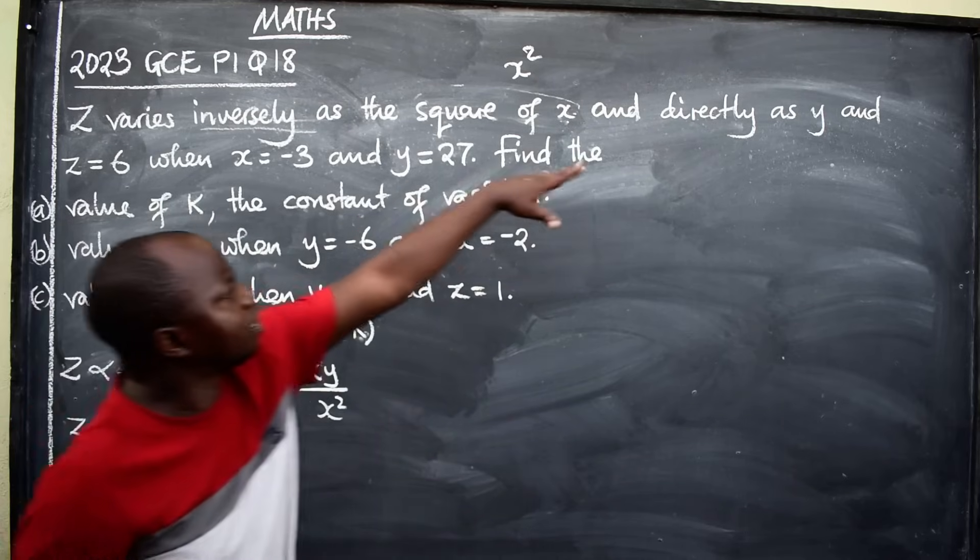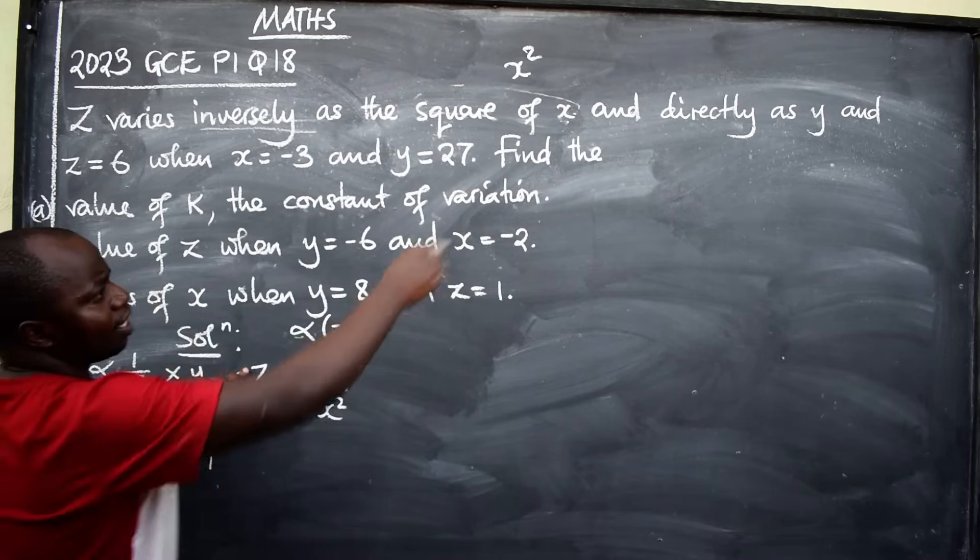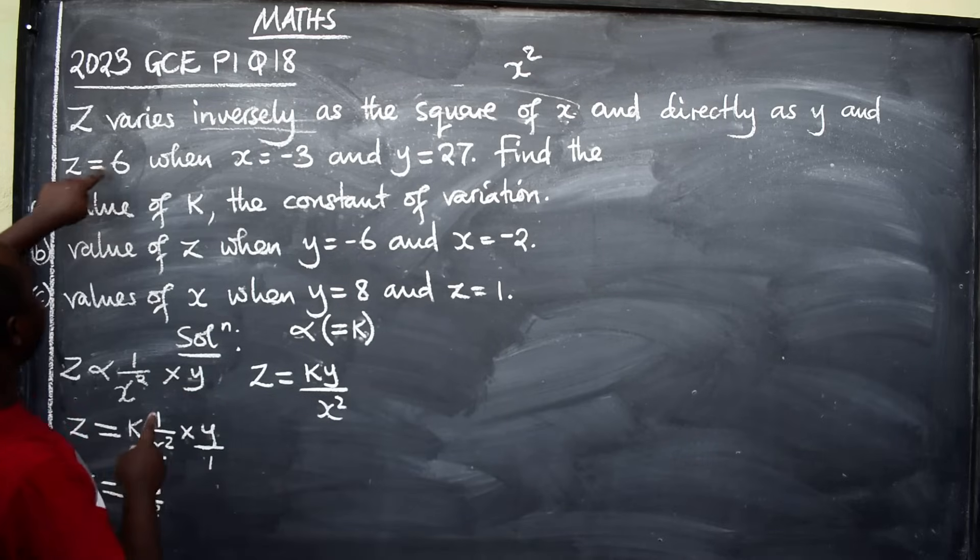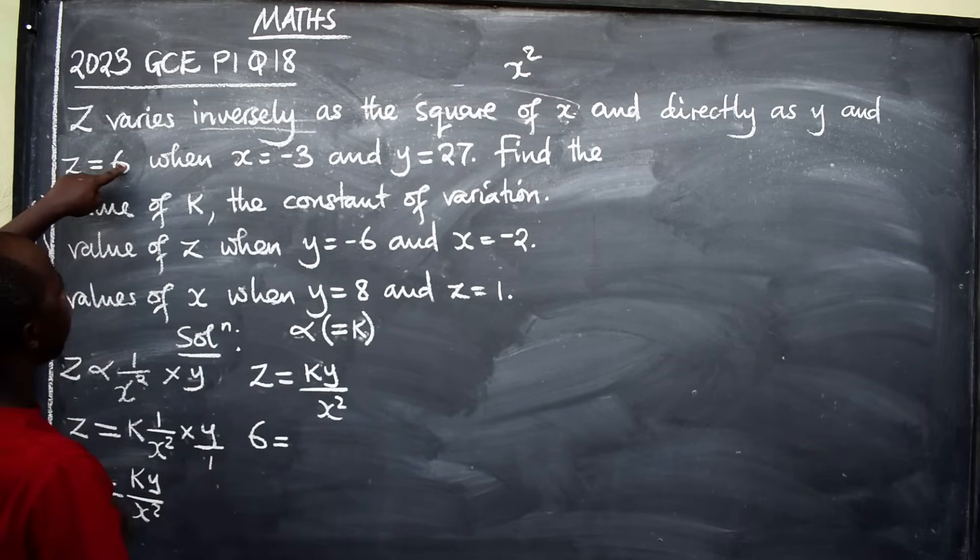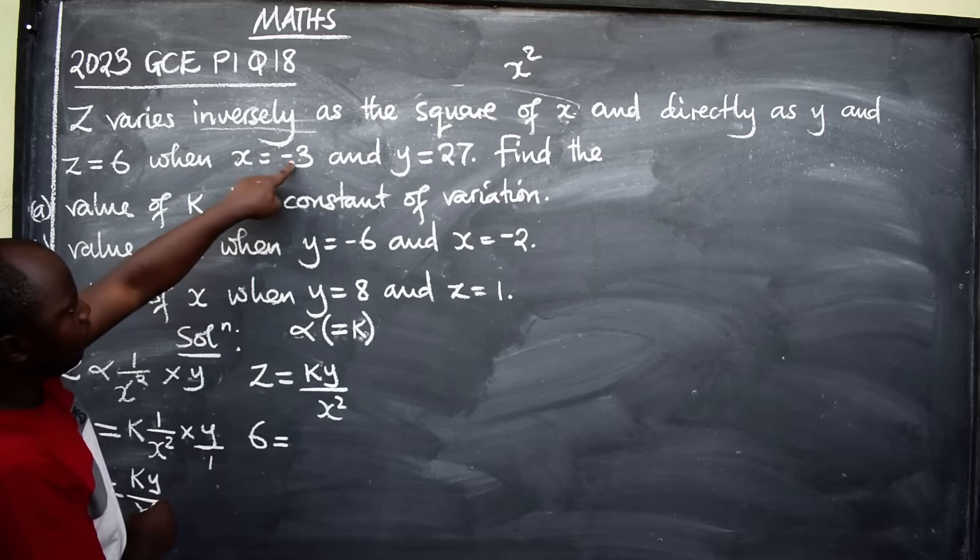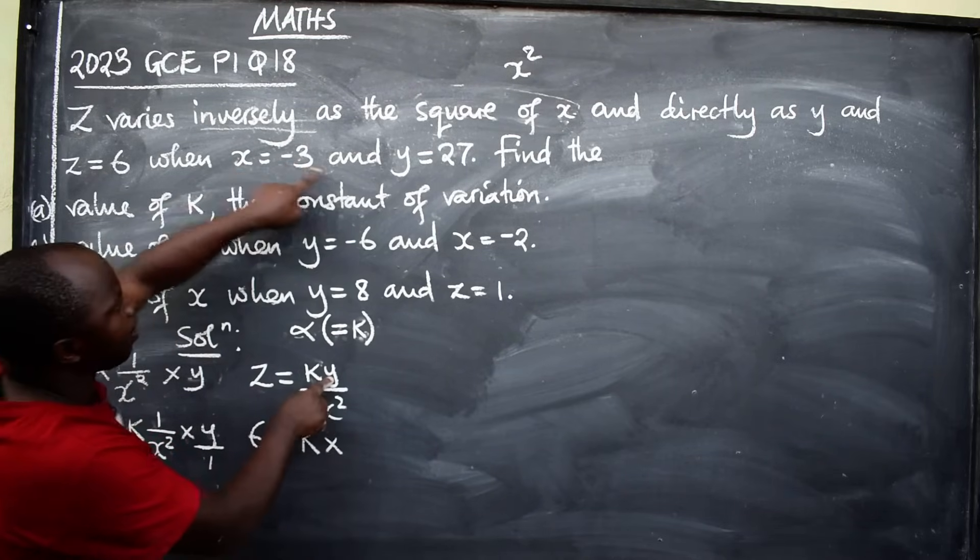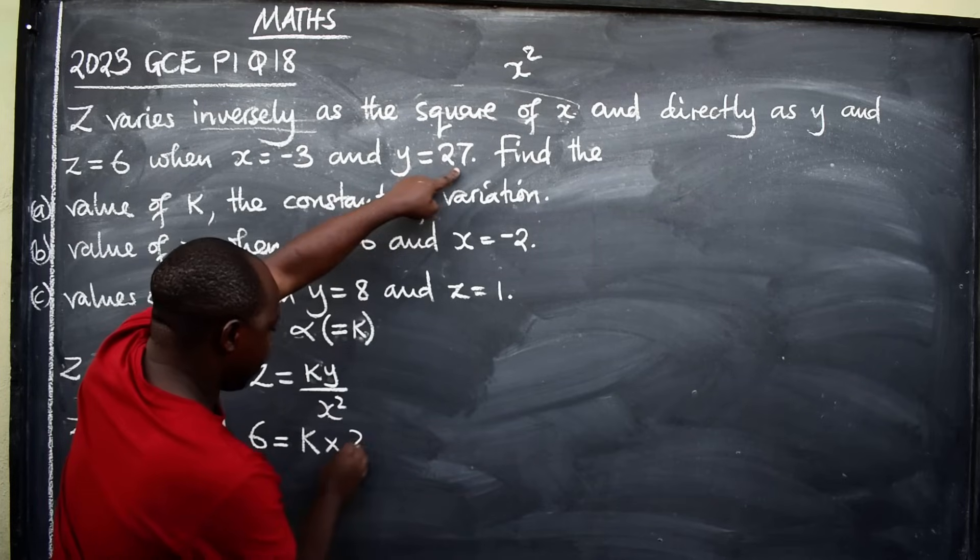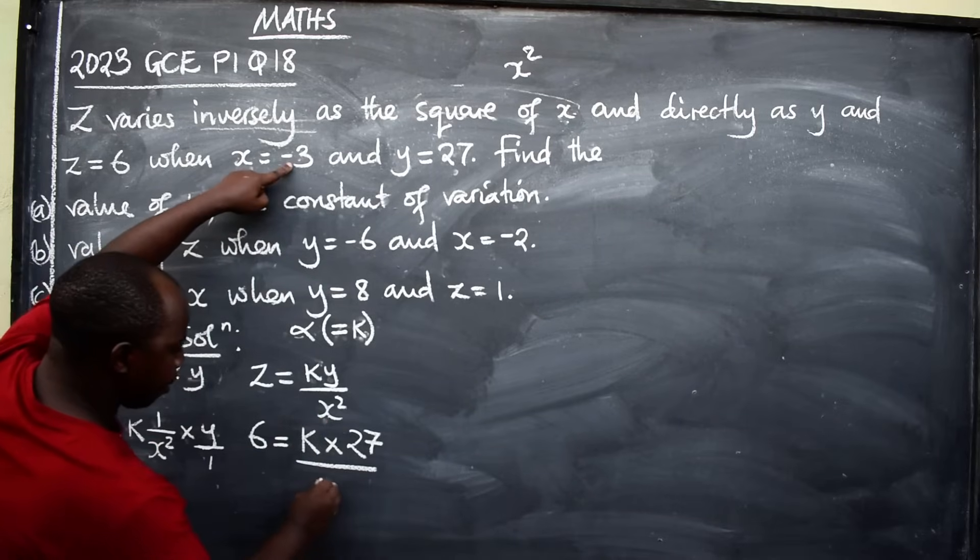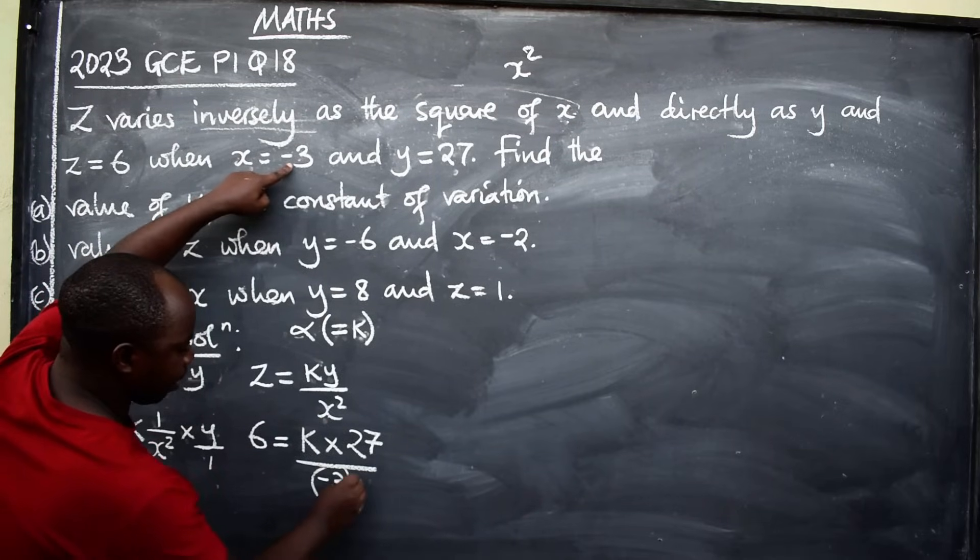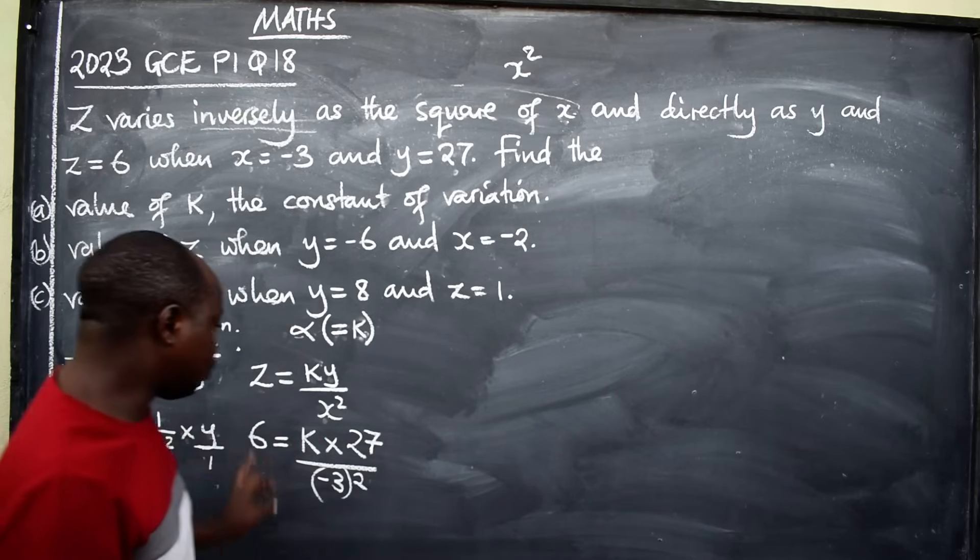Now the first step is to find the value of k, which is the constant of variation. How do we find this value of k? You use the values that you have been given in the equation. Start substituting. What is z? They are saying z is equal to 6. So z, put 6 here. k is equal to, x is equal to negative 3. So k times, what is my y? 27 over x here, negative 3 squared, put it in brackets.